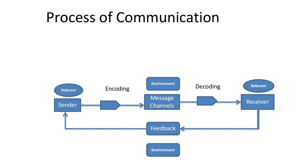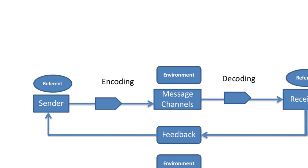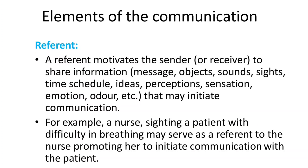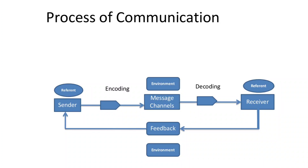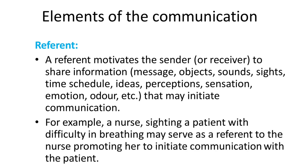Let's see the communication process in detail. Under the referent you have the sender; on the other side you have the receiver. The sender encodes the message and sends it through a proper channel in a suitable environment. The receiver decodes and understands the message, then sends a reply or feedback. So the key elements are: sender, message or channel of communication, receiver, and feedback.